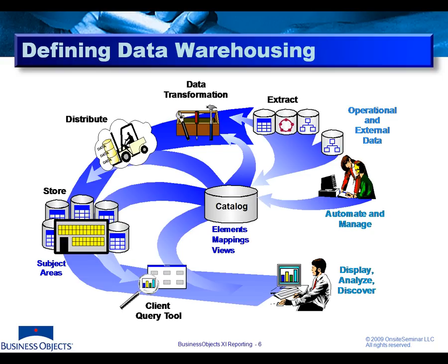This process of data transformation involves converting, cleansing, and standardizing our data. We then take that information and distribute it into our warehouse structures — a data warehousing environment that puts our operational data into a relational-type world where all data has been cleaned and is in the proper format.